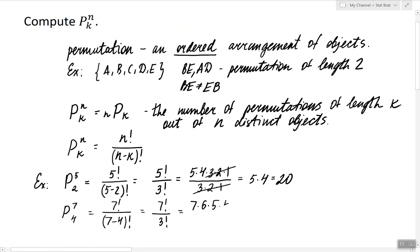So 7 factorial is 7 times 6 times 5 times 4 times 3 times 2 times 1. But this time, instead of writing out 3 times 2 times 1, I'm just going to keep the factorial notation and reduce the entire 3 factorial.